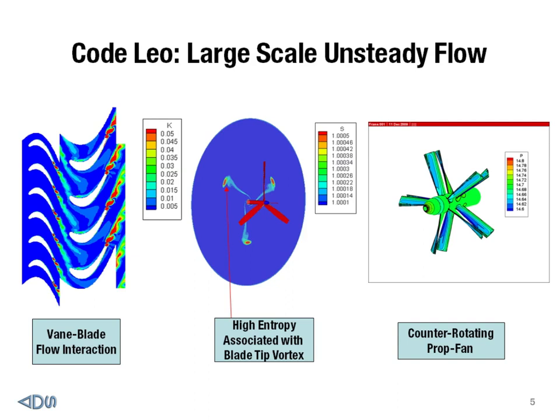The next chart shows that we can also do time-accurate simulation for a multi-stage compressor, as well as a turbine, to assess and understand problems associated with rotor-stator interactions. In the center is a contour plot for a three-bladed wind turbine, showing entropy contour at one rotor radius downstream, demonstrating that we can capture the tip vortex flow relatively accurately. On the right-hand side is our attempt to do the calculation for a counter-rotating problem using time-accurate simulation.